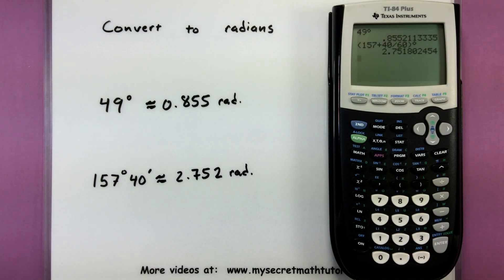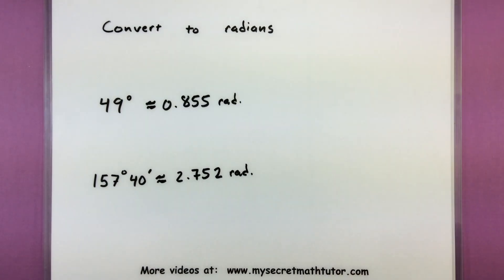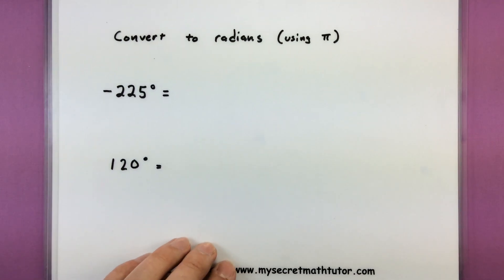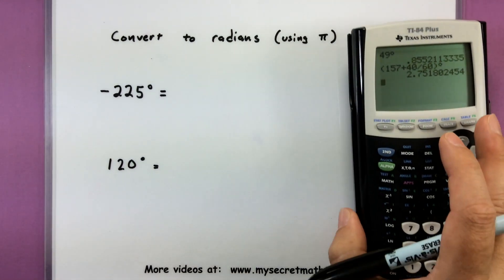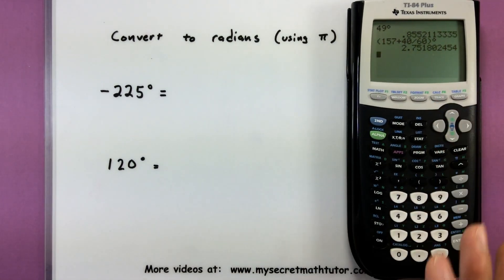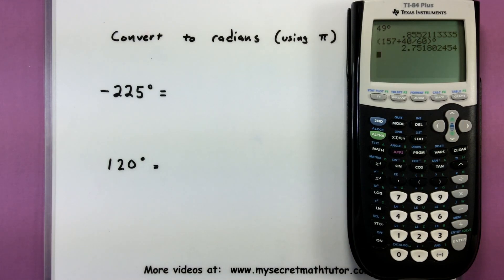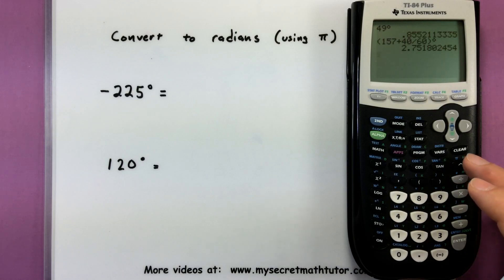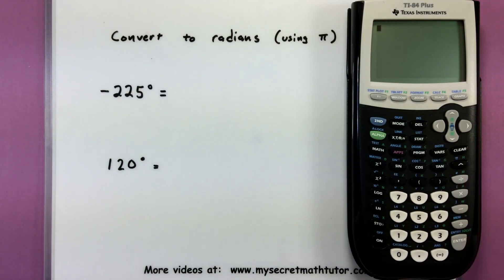Now you may be curious, you've seen some radian measures and sometimes they actually have π written in them. Even if they have π, you can still use your calculator to convert them. But you have to kind of interpret the answer you're getting just a little bit. So it won't show up on the screen. We have to do just a little bit of work. For example, here's negative 225 degrees.